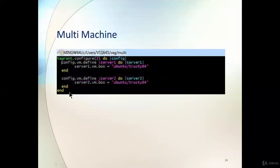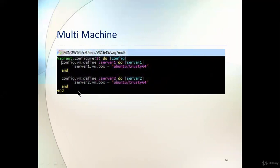If someone wants to run two machines — server one and server two — it is possible. We write `Vagrant.configure("2") do |config|`, then define the first machine with `config.vm.define "server1" do |server1|`, set `server1.vm.box = "ubuntu/trusty64"`, and then define the second machine with `config.vm.define "server2" do |server2|` and set `server2.vm.box = "ubuntu/trusty64"`.